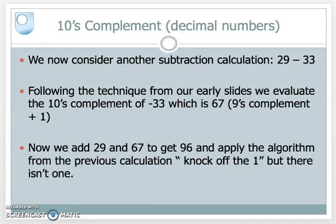Let's look at a second subtraction: do the calculation 29 minus 33. We're going to follow the same technique and work out the 10's complement of minus 33. We add something to each digit to bring it up to 9 — that something is two 6's: 66. Then we add 1 to it — the 9's complement plus 1 — giving us 67.